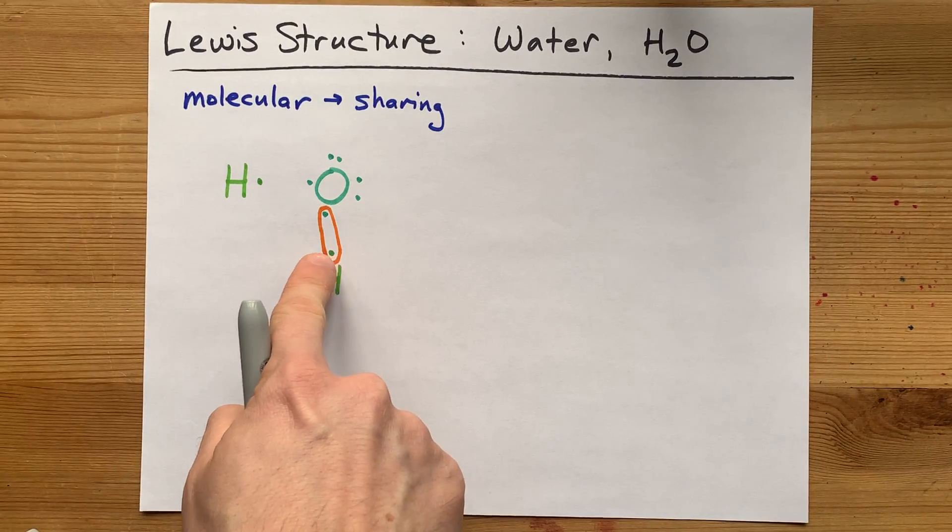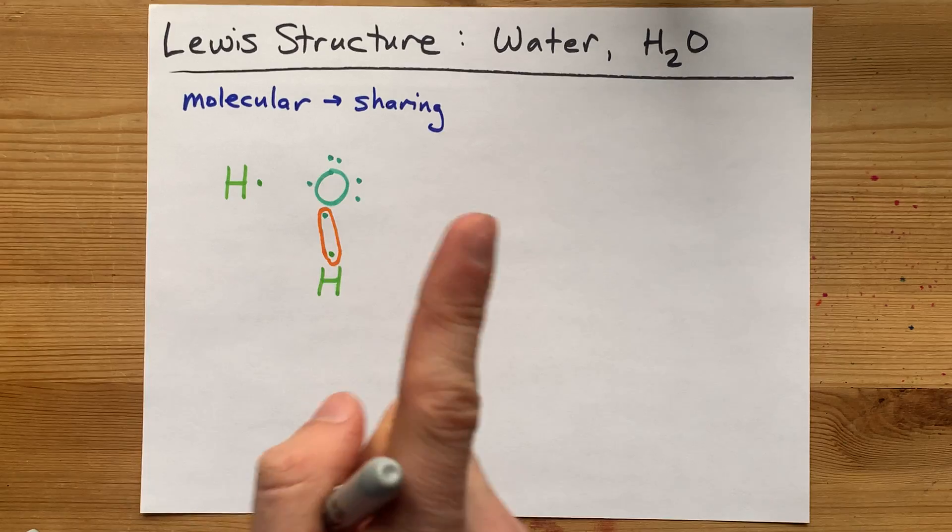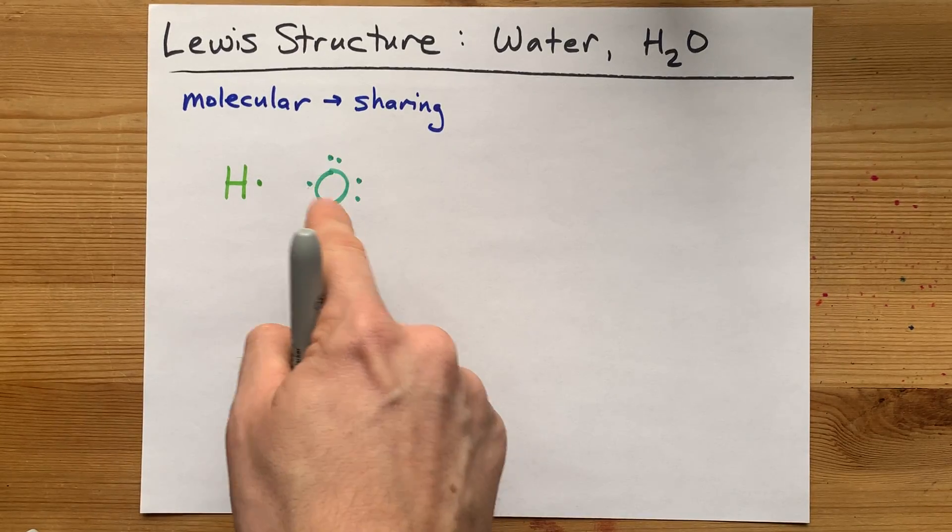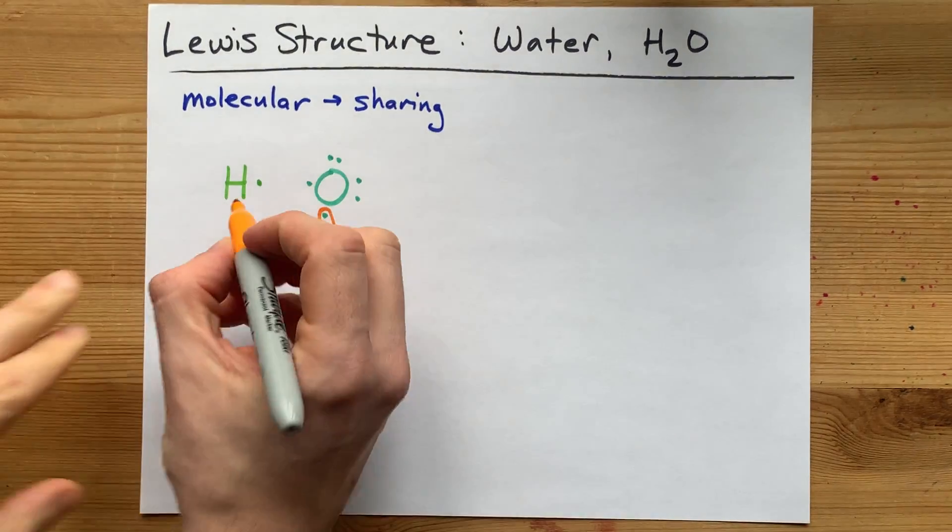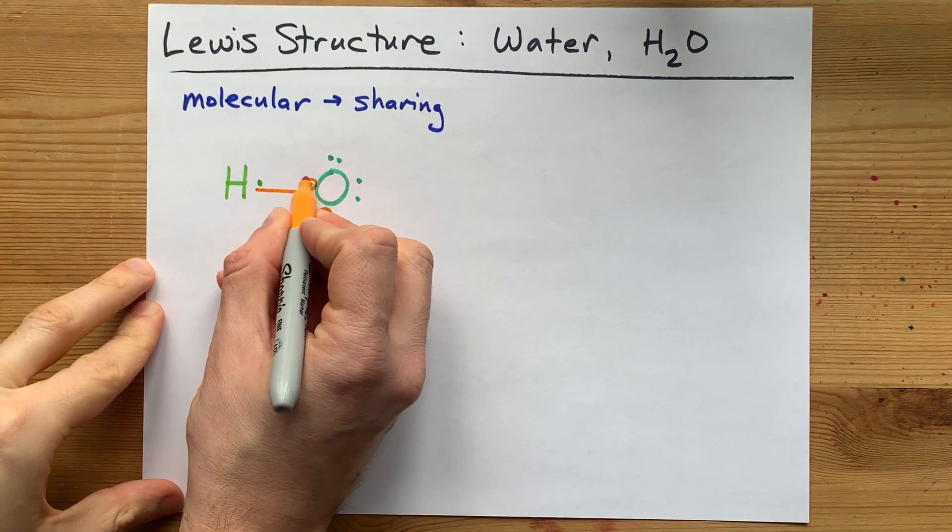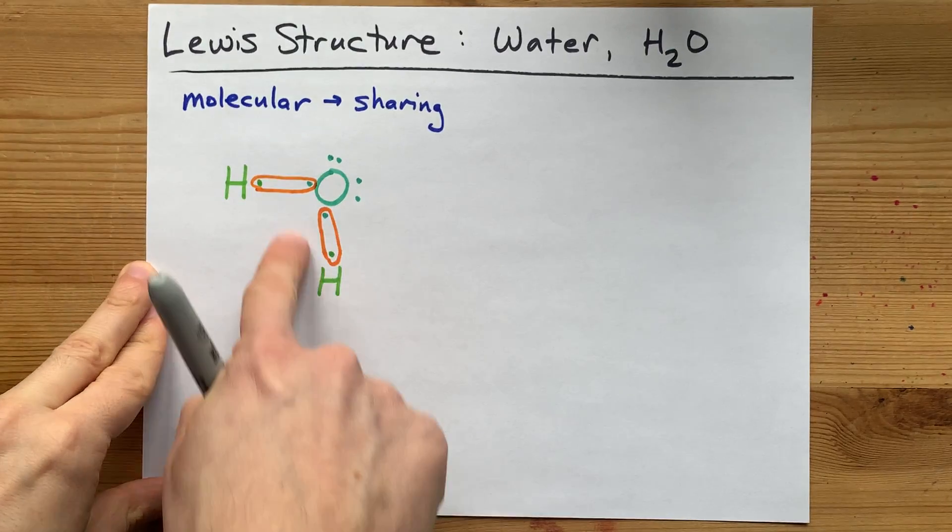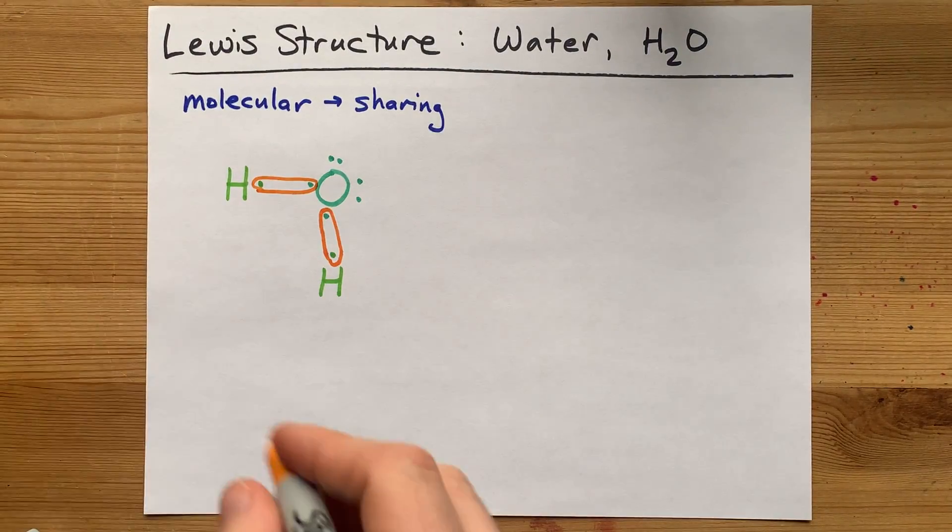This hydrogen now has one, two electrons around it. It's happy. See, oxygen now has six plus one, which is seven. Need one more. Don't worry. You've got an extra hydrogen here. Now, oxygen has eight electrons around it.